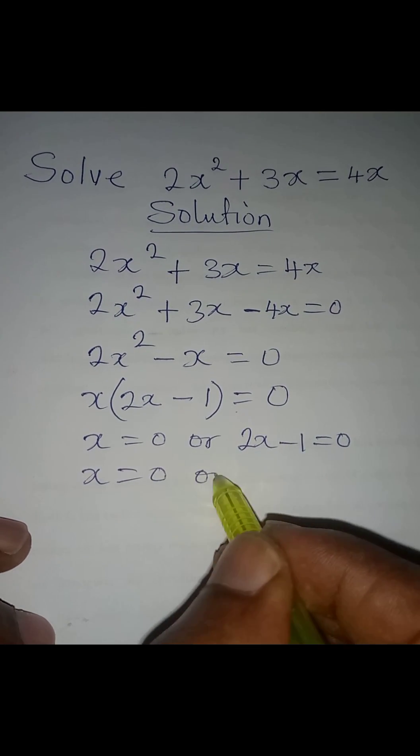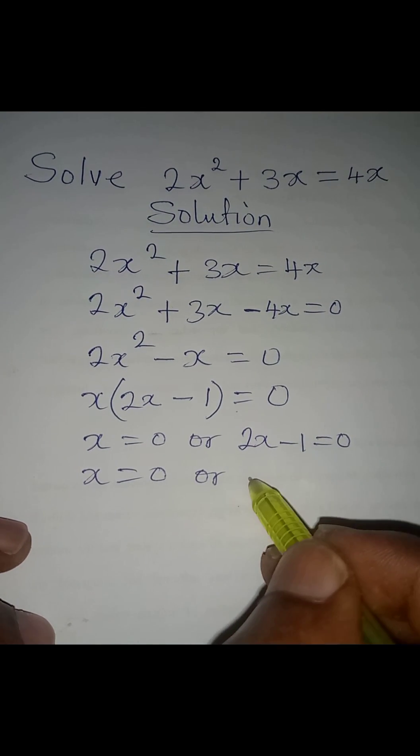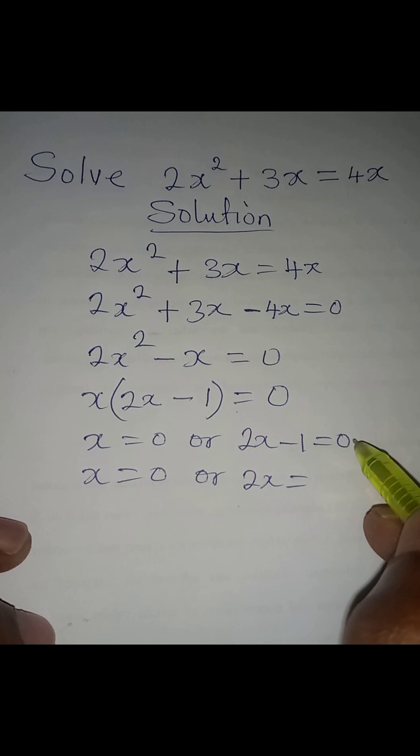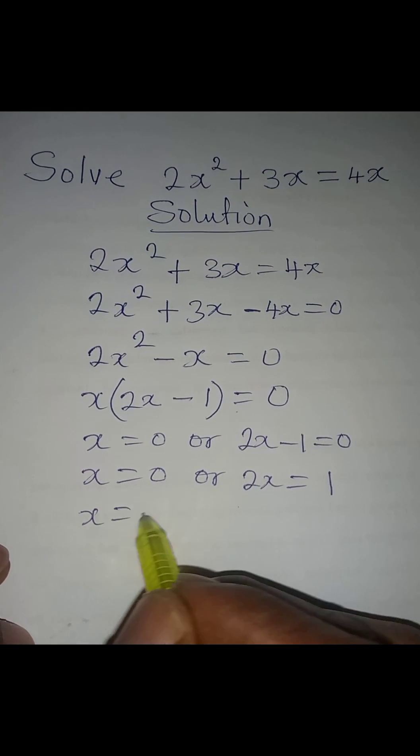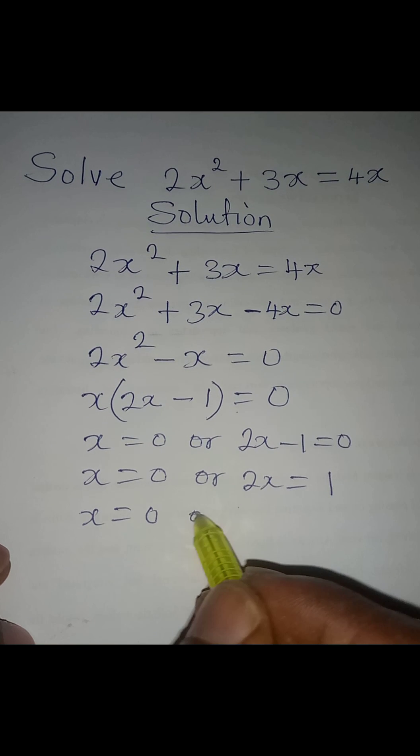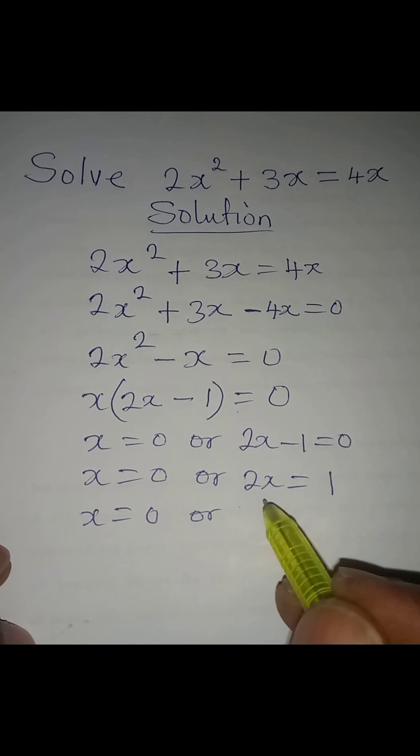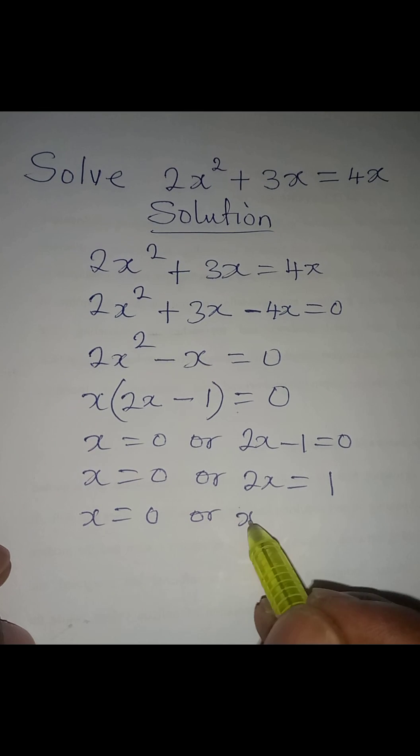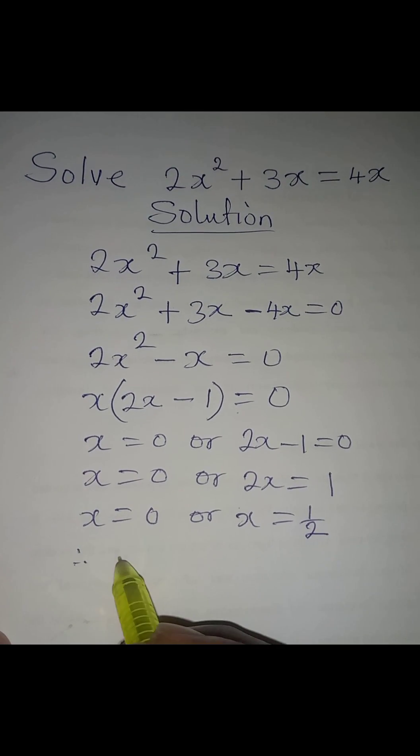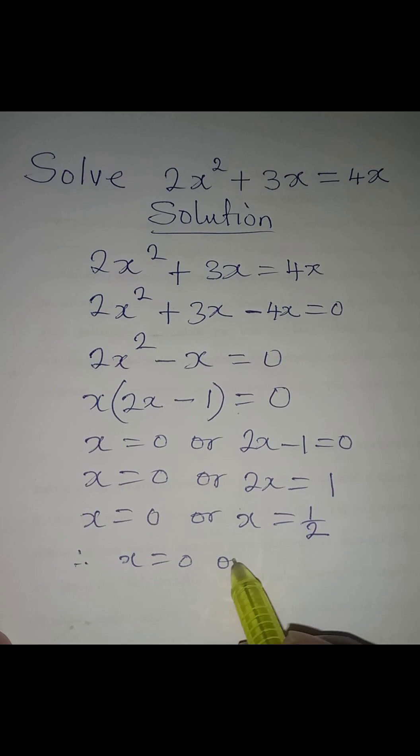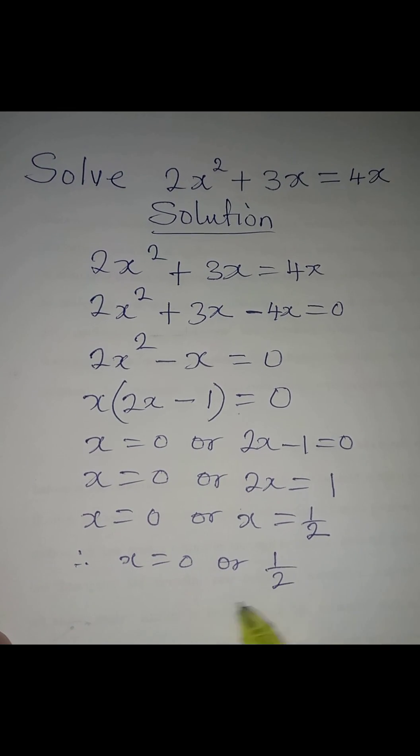x = 0, or on this side 2x = 1. To get x, we divide by 2, so x = 1/2. Therefore, x = 0 or x = 1/2.